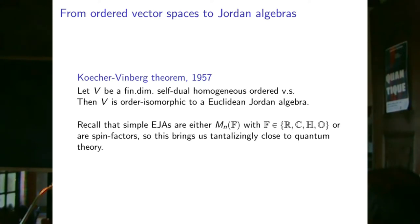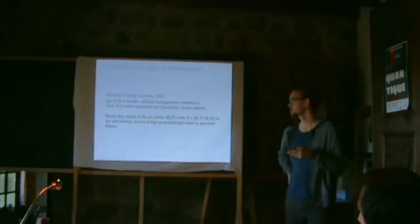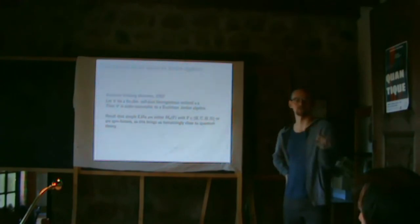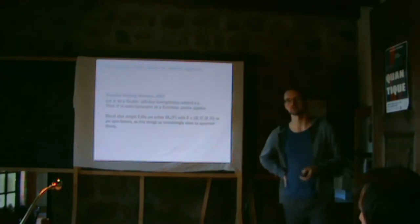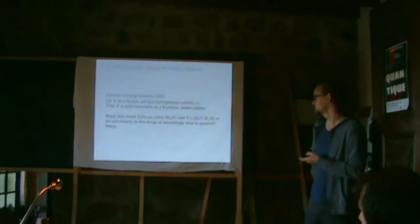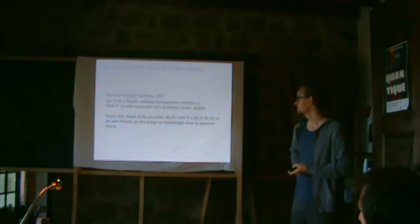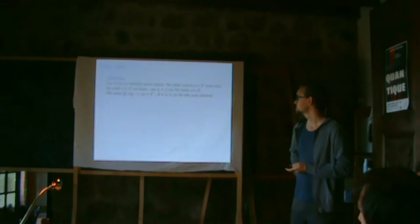To recall: any formally real (equivalently Euclidean) Jordan algebra is a direct sum of simple ones: matrix algebras over the reals, complex numbers, quaternions, octonions, or spin factors. So just from the order structure, we get quite close to quantum theory. Many reconstructions start with an ordered vector space, show self-duality and homogeneity, invoke this theorem, and proceed to get complex matrix algebras.